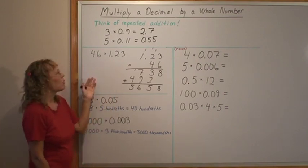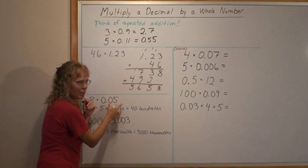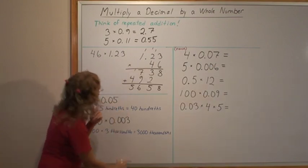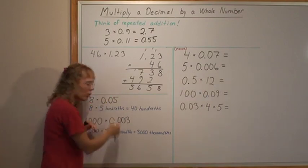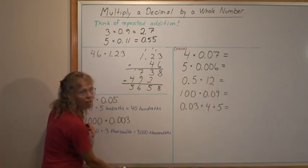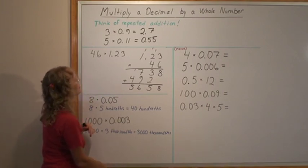If you were adding you would have 1.23 written under each other 46 times and you were adding them all. And in addition you line up your decimal points. You'll have in the end hundredths there at the very bottom. Two decimal digits and then the point and something.